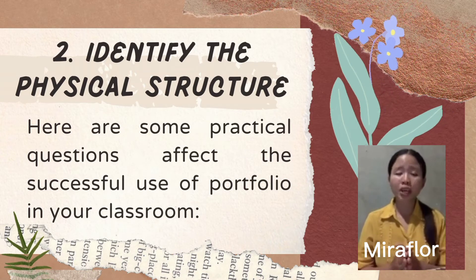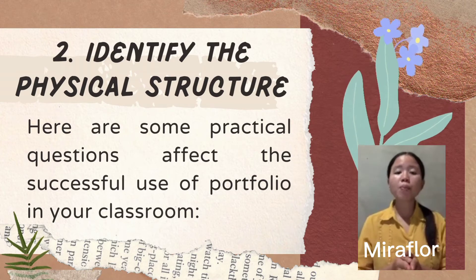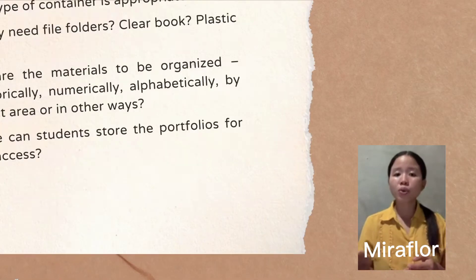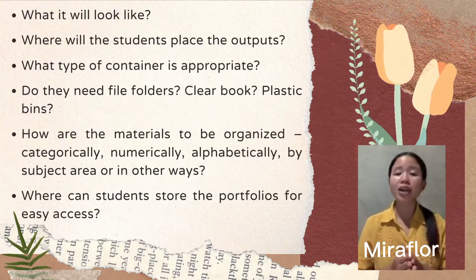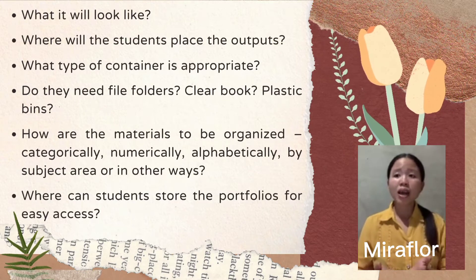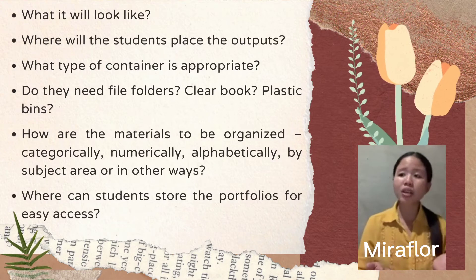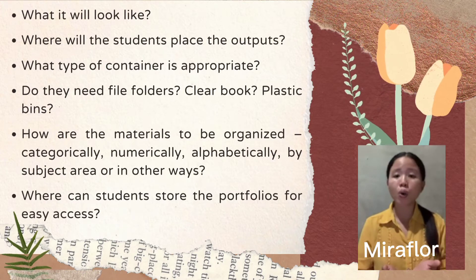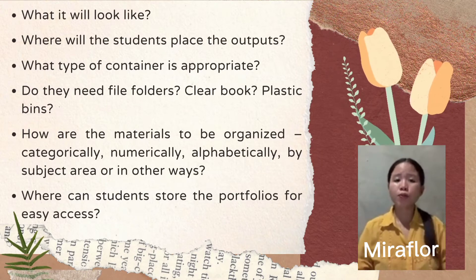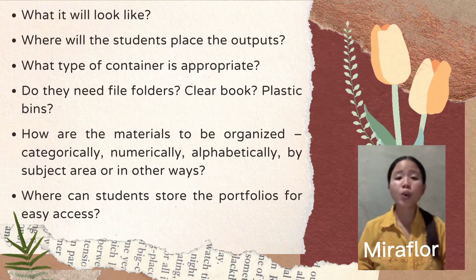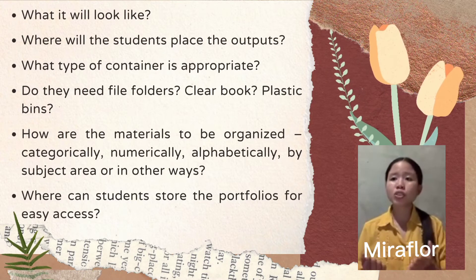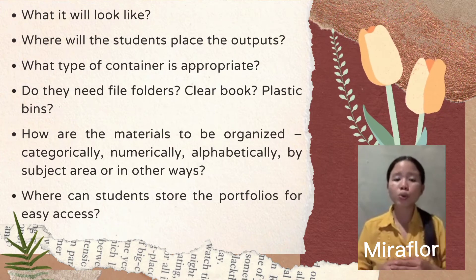Once the purpose and targets have been clarified, we need to think about the physical structure of the portfolio. Practical questions include: What will it look like? Where will students place their outputs? What type of container is appropriate — file folders, clear book, plastic bins? How are materials to be organized — categorically, numerically, alphabetically, by subject area, or other ways? Where can students store their portfolios for easy access? If students cannot manage and access their materials effectively, they will become discouraged. The choices of products and work outputs influence what students include in their portfolio.